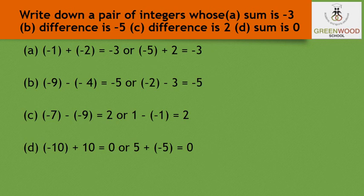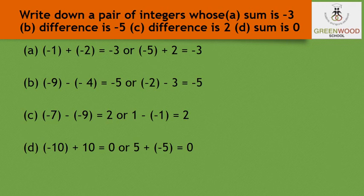For the third part, the difference is 2. Selecting minus 7 and minus 9: subtracting minus 9 from minus 7 gives 2. Similarly, subtracting minus 1 from 1 also gives 2. For part D, the sum is 0. We select integers with opposite signs — minus 10 plus 10 gives 0, and minus 5 plus 5 also gives 0. So you can select any integer and its opposite to get a sum of 0.